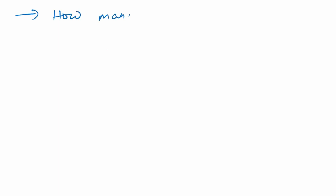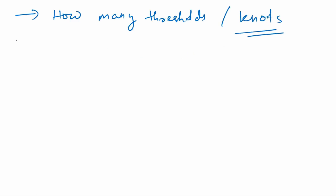How many threshold points — we also call them knots — are going to be there, and where to place them? There is no thumb rule about how many thresholds or exactly where to place them. You do it through cross-validation. The number of thresholds that gives you the best fit is the one to be used.